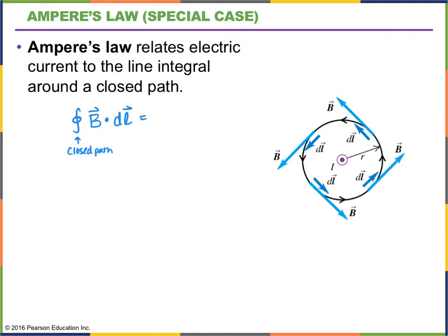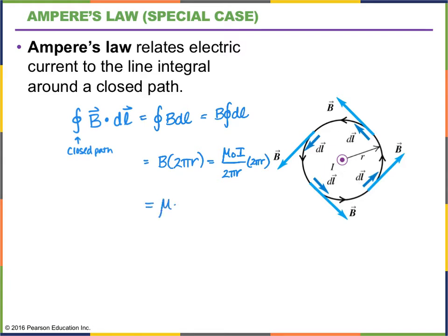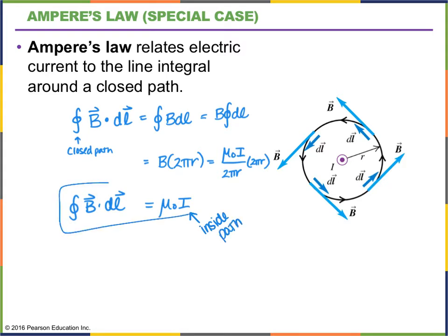That simplifies the integral because we can get rid of the dot product — it's just B times dl. Since the magnetic field is constant on that circle, we can take B outside the integral. Integrating all the way around gives a total distance of 2πr. The magnetic field at that location is μ₀I over 2πr, and multiplying by 2πr gives the result that this integral equals μ₀I. So when we integrate the magnetic field around that closed loop, that integral equals μ₀ times I, where I is the current inside the path. This is a statement of Ampere's law.